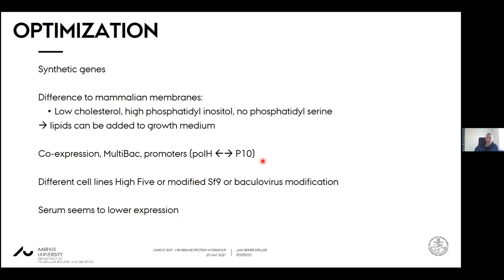Coming to optimization — something like synthetic genes you should definitely consider. Insect cell expression is quite expensive, maybe not as expensive as mammalian cell culture, but maximizing protein amounts is definitely advisable. You need to think about the membrane composition, especially for membrane proteins. You have some levels of cholesterol, though they are low. You have high phosphatidylinositol but no phosphatidylserine, so you need to consider that. If you know something about the protein, you can add relevant lipids — this has been shown for GPCRs, which have been studied extensively regarding expression in insect cells. If you're looking for advisors, look for GPCR expression data in insect cells — there's a lot of data on that.